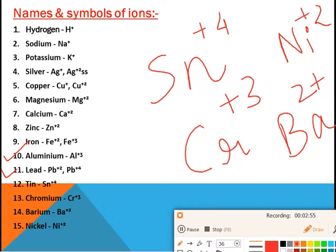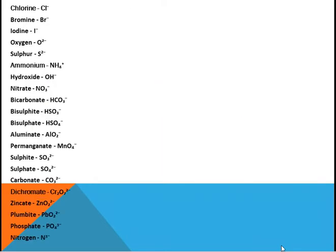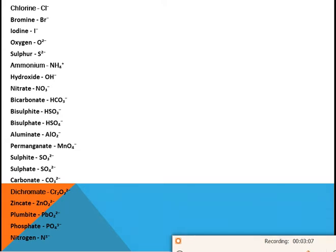Now let's discuss the negatively charged ions we will use in writing chemical compounds. Chlorine has valency Cl⁻, bromine is Br⁻, and iodine is I⁻. These three are halogens from the halogen family, so they all have the same valency: Cl⁻, Br⁻, and I⁻.